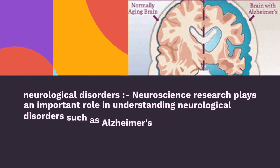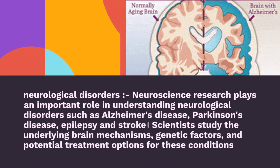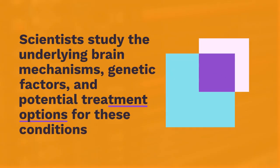Neurological Disorders: neuroscience research plays an important role in understanding neurological disorders such as Alzheimer's disease, Parkinson's disease, epilepsy, and stroke. Scientists study the underlying brain mechanisms, genetic factors, and potential treatment options for these conditions.